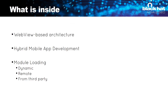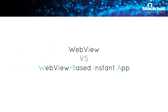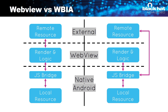What's inside, you may ask. There are two common architectures. The most popular one is based on WebView. From a developer's perspective, it's a very flexible way to develop hybrid mobile apps. Unlike traditional hybrid apps, instant apps can load and run remote modules provided by a third party. The WebView in an instant app is highly isolated. The most important difference is that it can't get any data or remote resources unless it communicates through JSBridge.